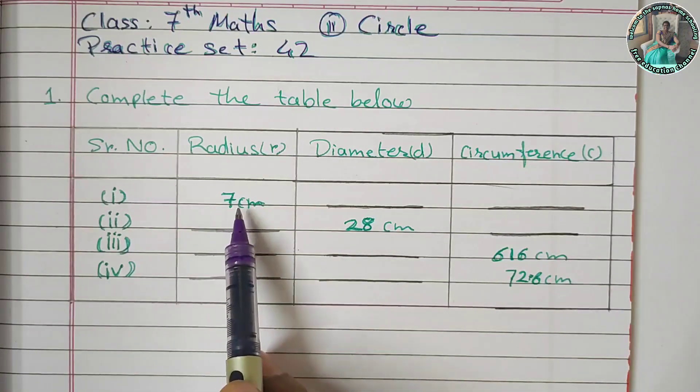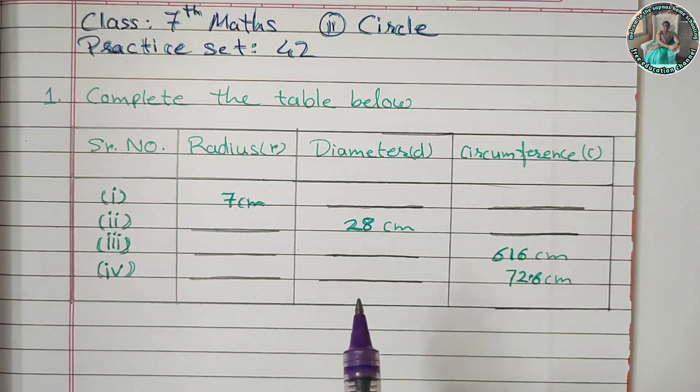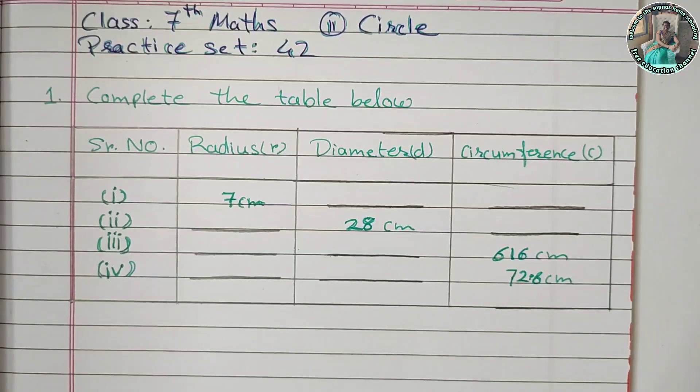In the first question, the radius is 7 cm. We need to find out the circle diameter and circumference. What is the circumference formula? 2 pi r. If we use this formula, we need to find out the answer.